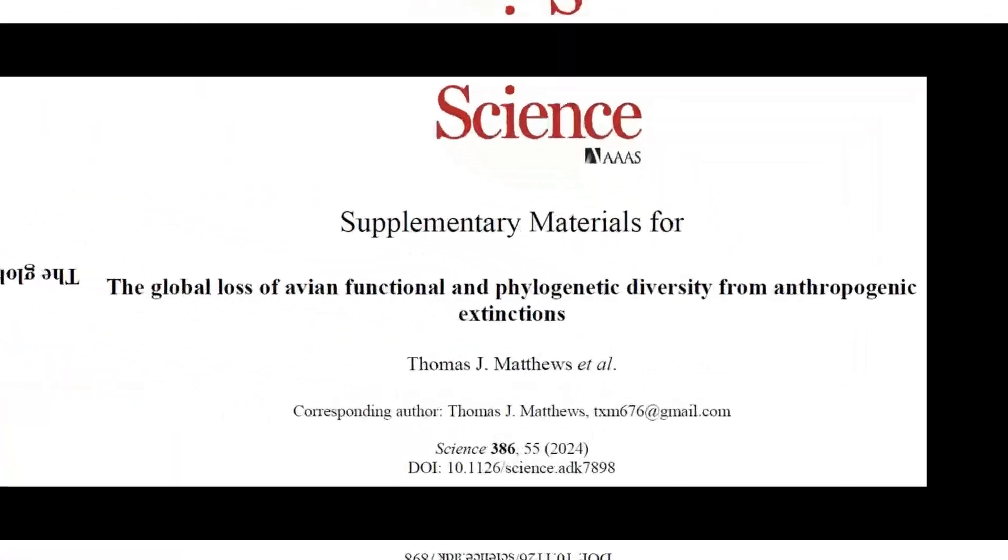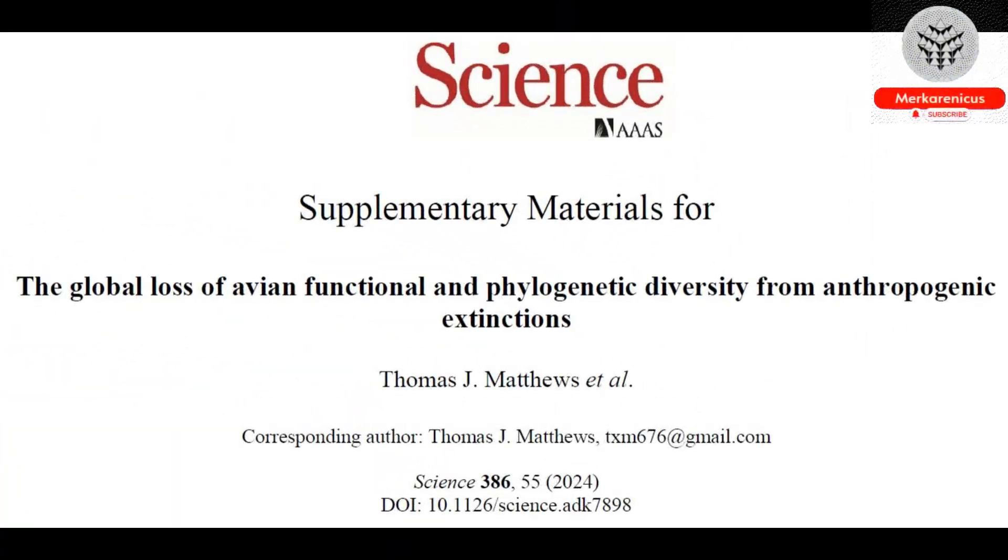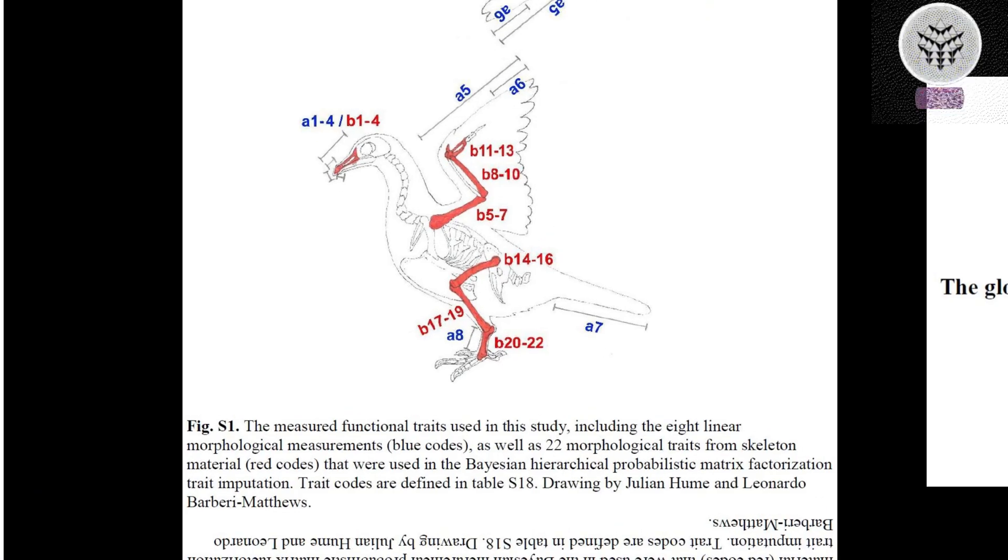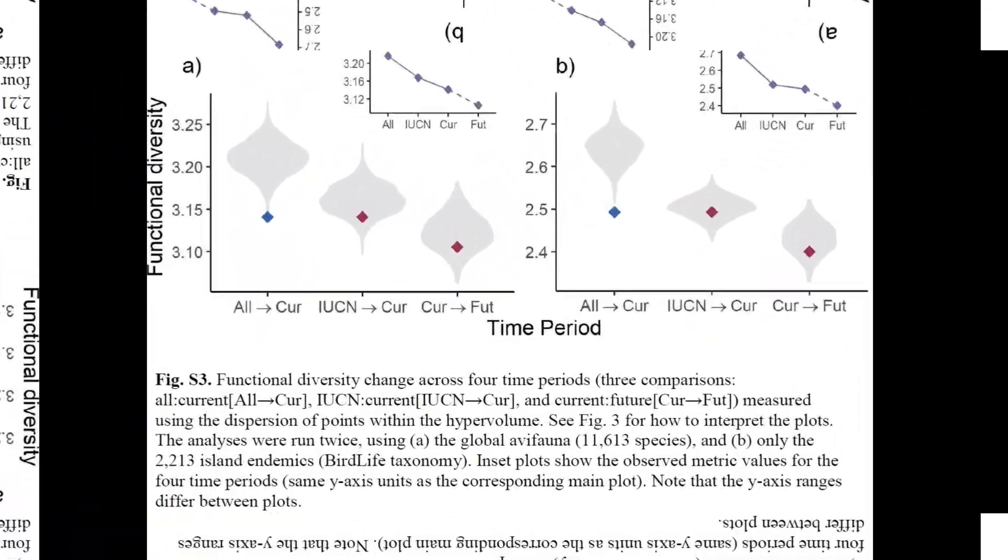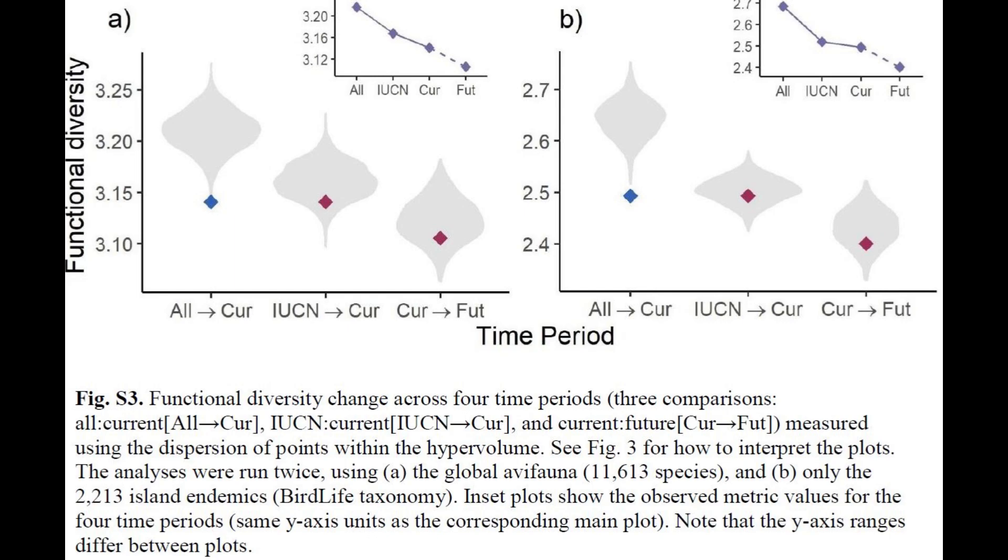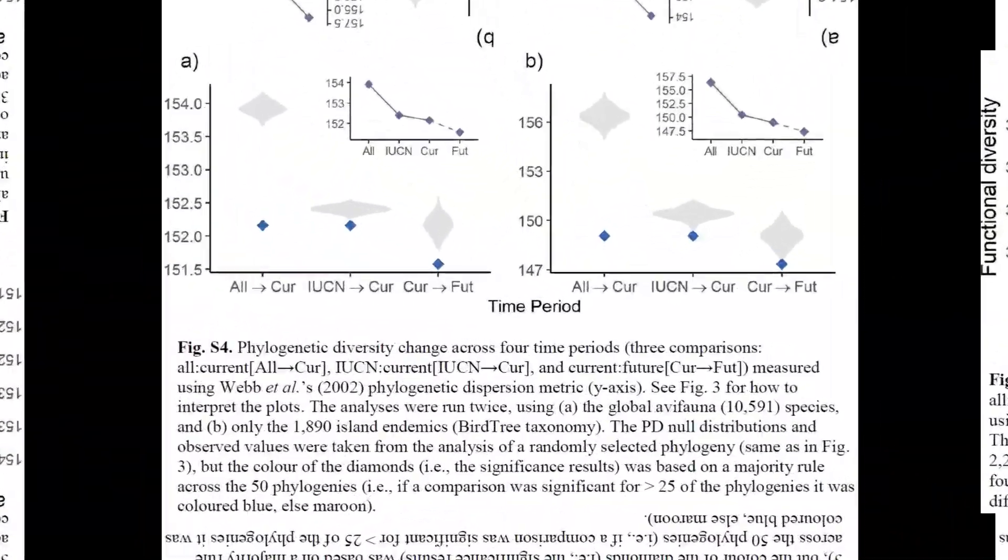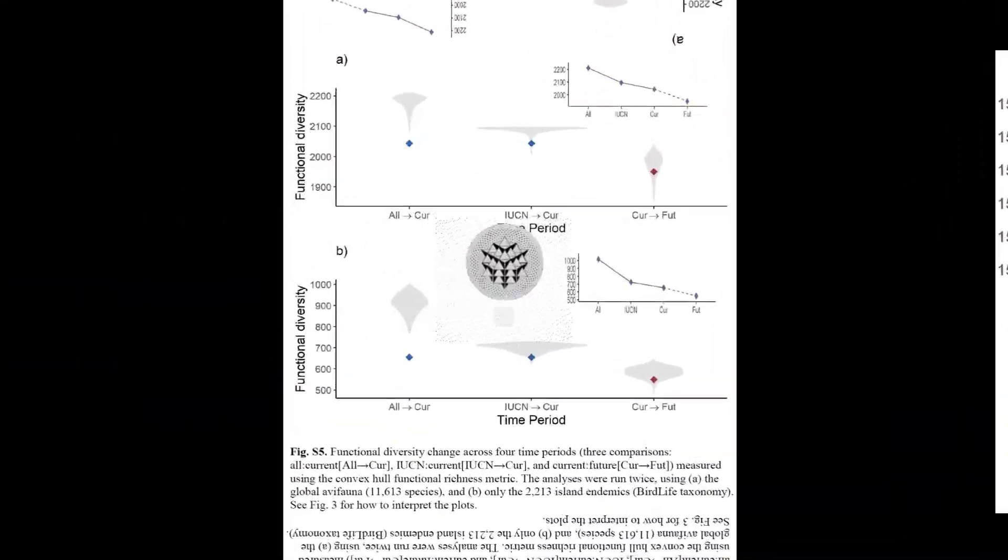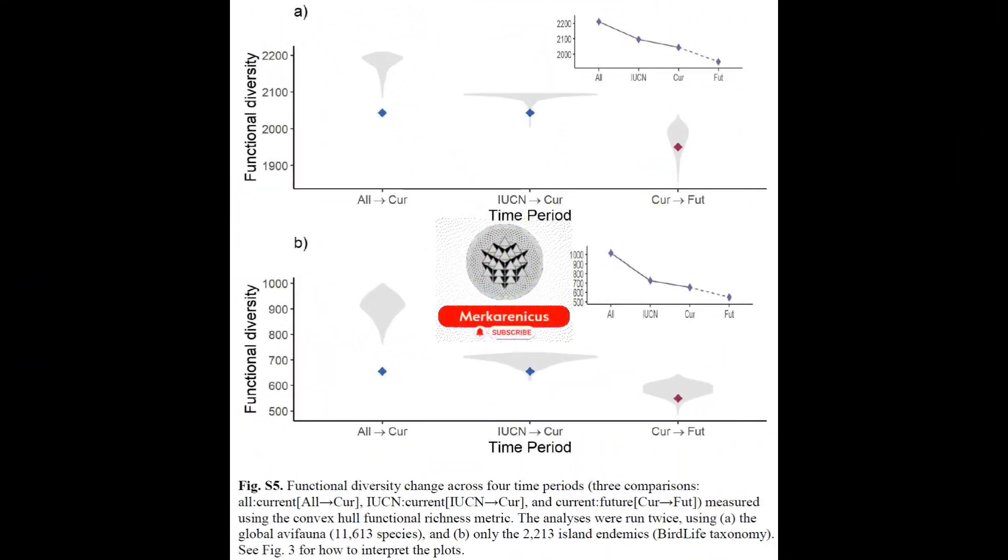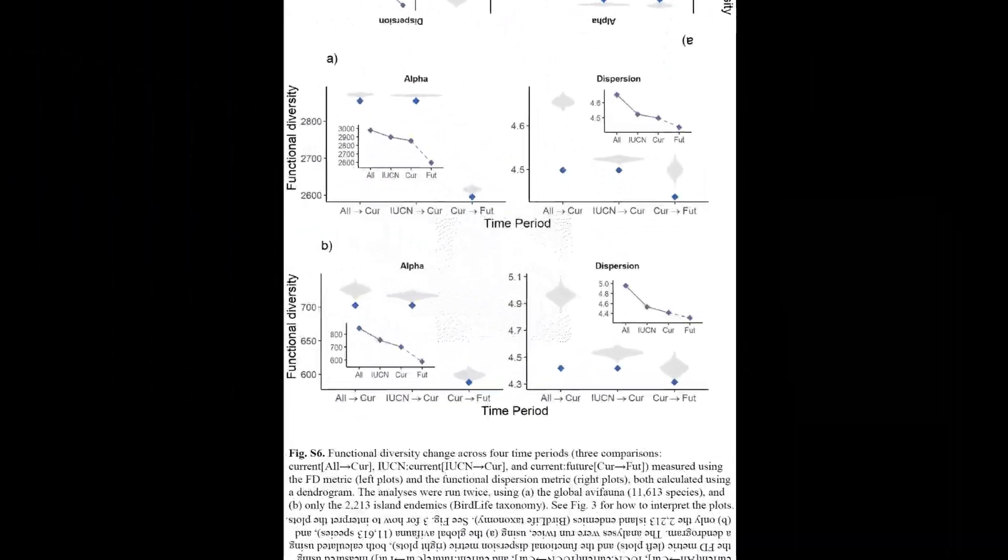This understanding is essential for preparing for the anticipated scale of future losses, with projections indicating that 1,000 bird species may face total extinction within the next two centuries. Such information is crucial for establishing effective objectives for global conservation initiatives, as well as for efforts related to ecosystem restoration and rewilding.